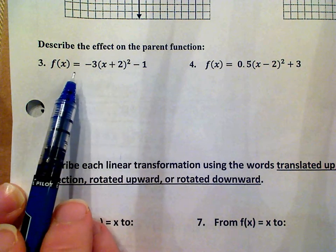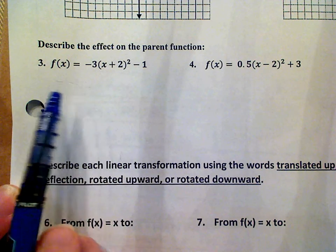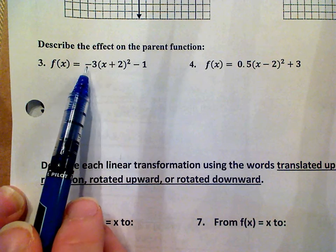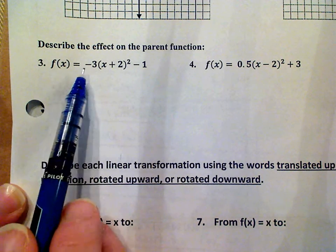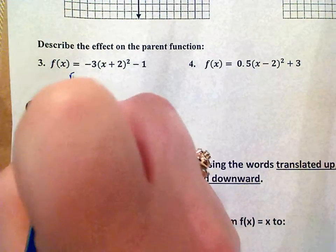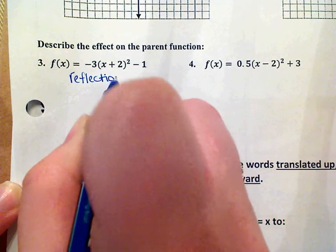So I'm going to start by looking left to right at the equation and the very first thing I'm going to look for is a negative sign which this one has. If there's a negative in front that means a reflection has occurred. So we do have a reflection on number three.